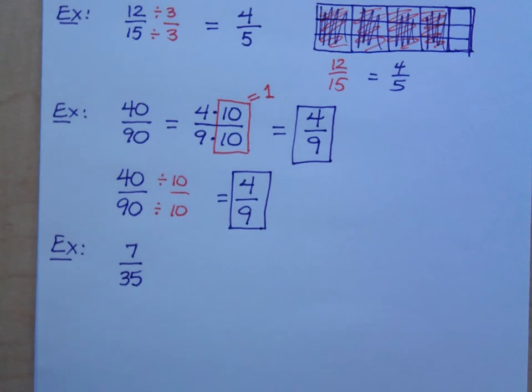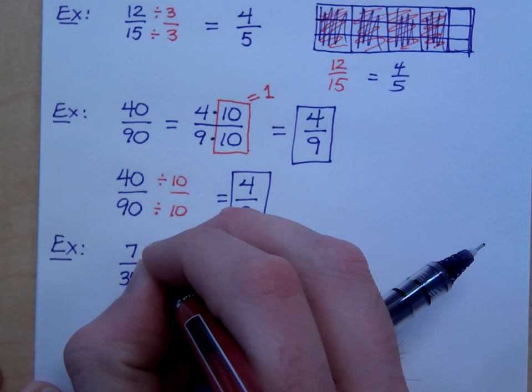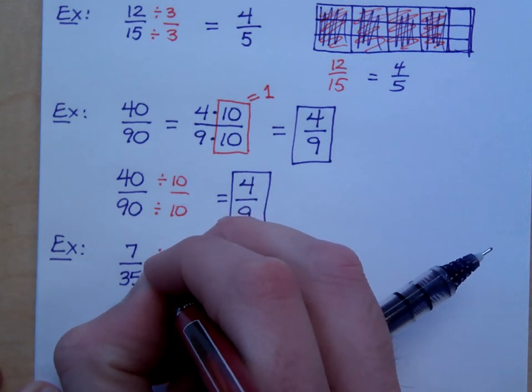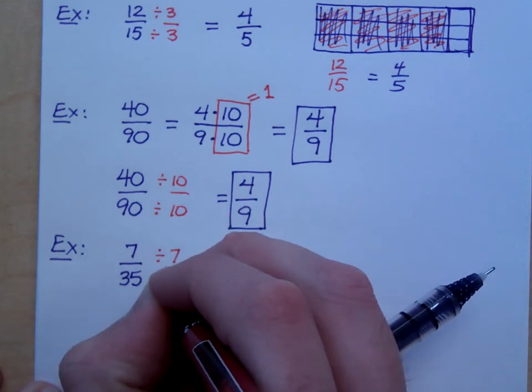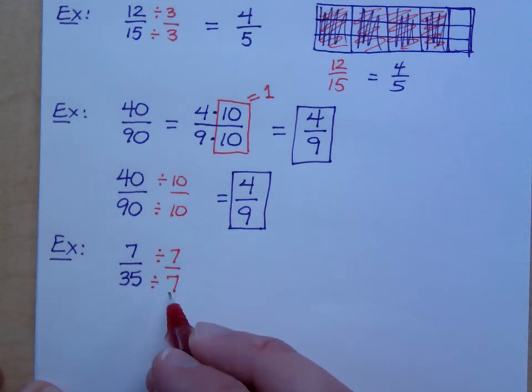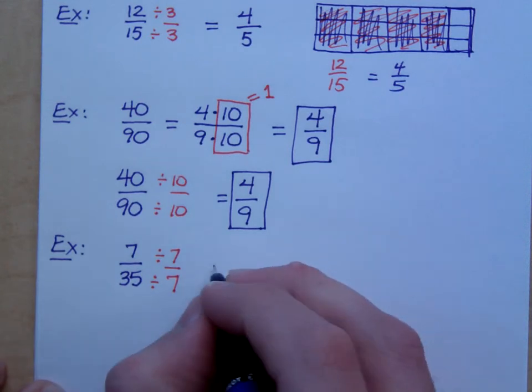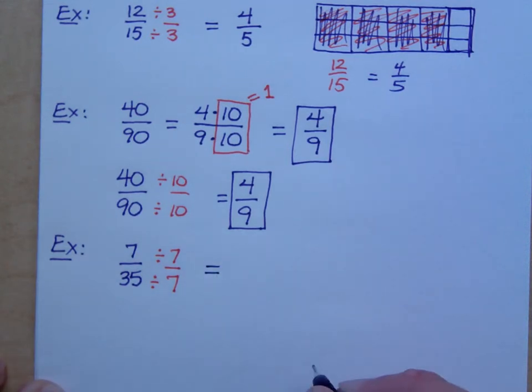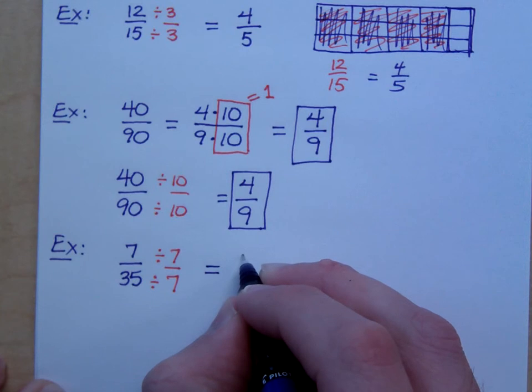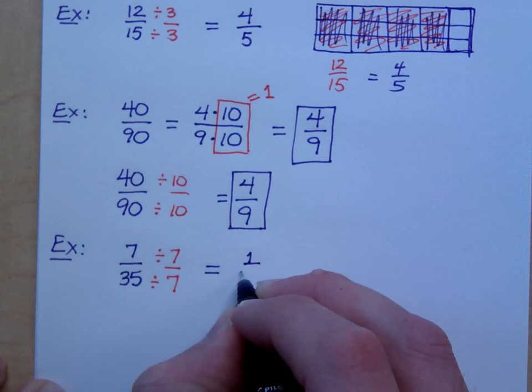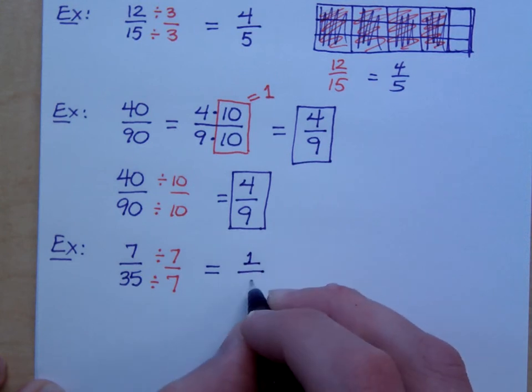Okay. Two ways of doing this. If I do it the way we were doing in the last class, you would say I can divide the top and the bottom by 7 because what is 7 over 7? That's 1. If I divide by 1, it doesn't change the meaning, it just changes the way that it looks. What's 7 divided by 7? It's 1. 35 divided by 7 is 5.